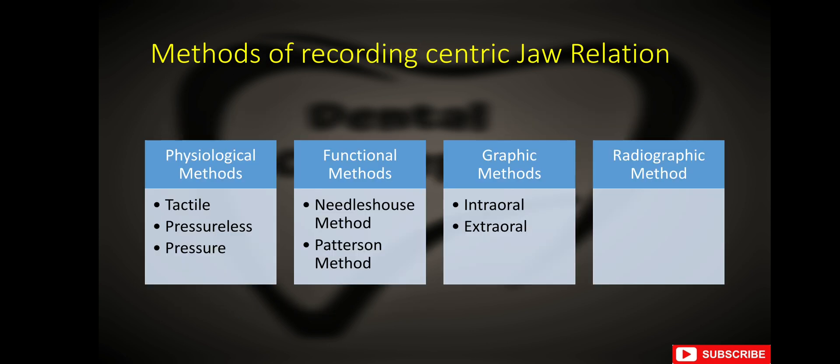What are the different methods of recording centric jaw relation? These methods include physiological methods, functional methods, graphic methods, and radiographic method. The physiological methods include tactile method, pressureless method, and pressure method. The functional methods are needle house method and Pedersen method. Graphic methods include use of extraoral and intraoral tracers.